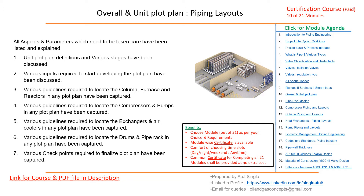There are many guidelines which need to be taken care of while locating the column, furnace and reactor, compressors and pumps, exchangers and air coolers, and drums and pipe racks. These are the basic equipment which will be available in most plot plans, and there are basic guidelines which have to be followed while developing a plot plan.